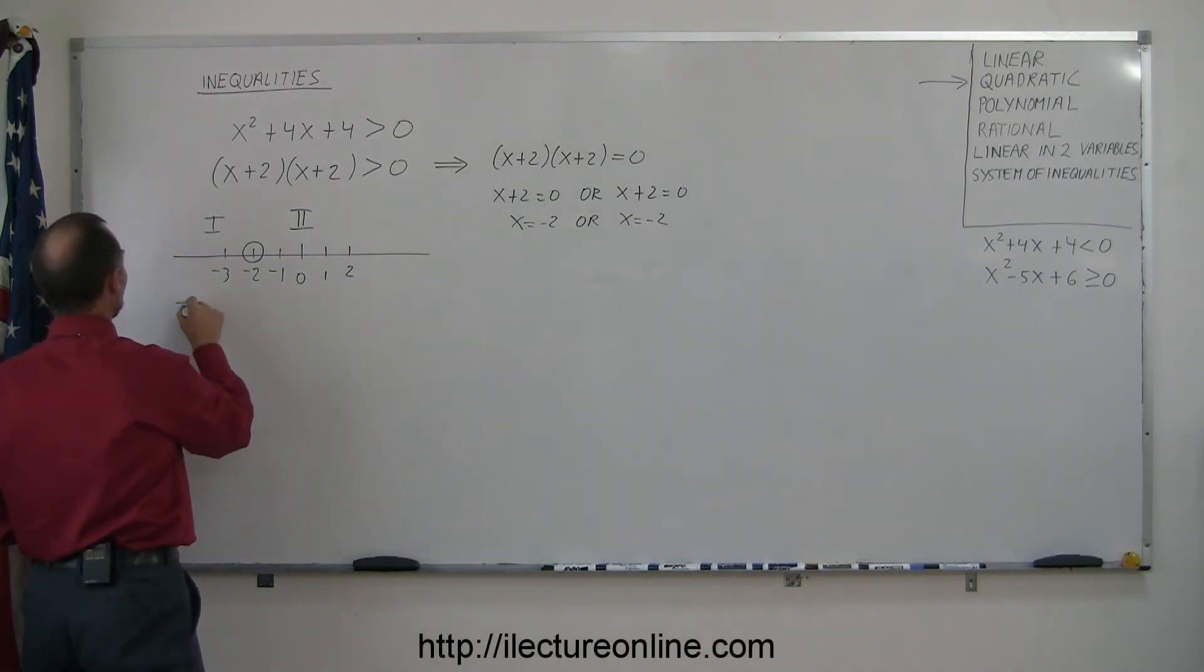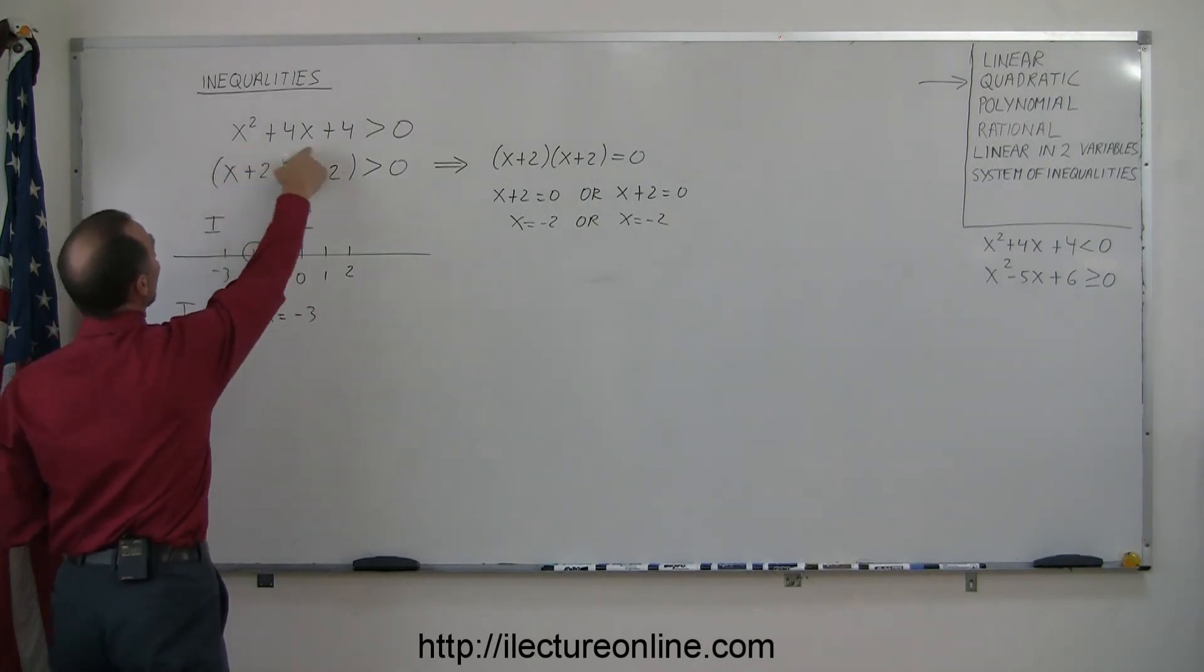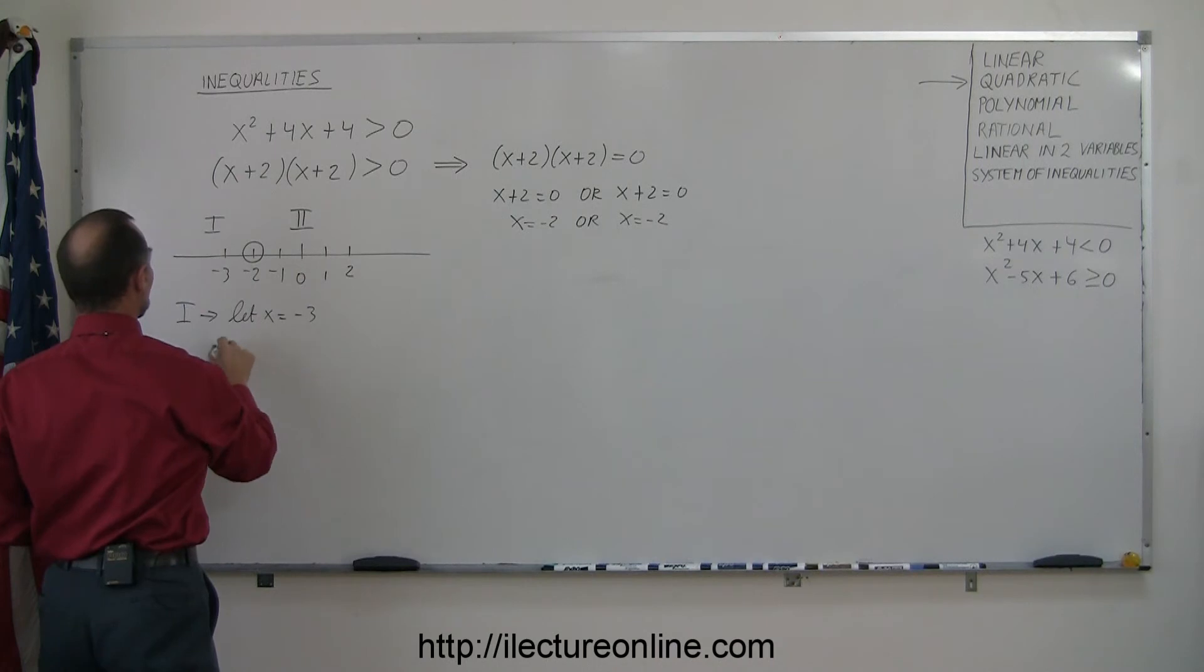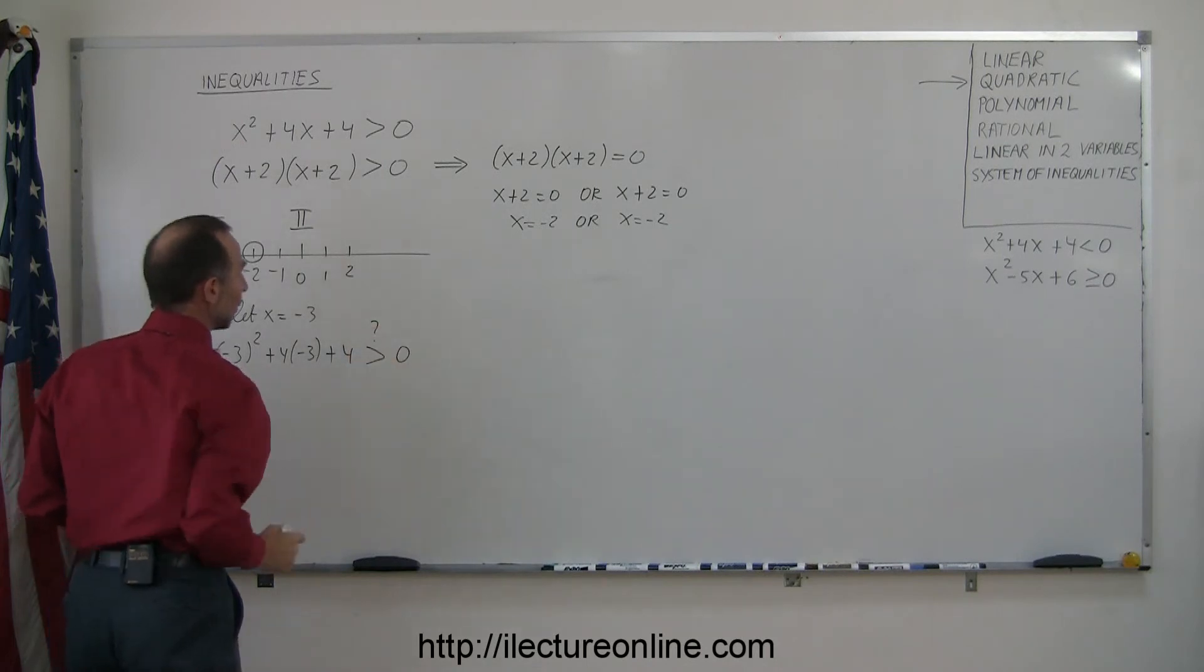So for region one, we're going to let x equal the test point -3. We'll plug that into the inequality right here, so we have (-3)² + 4(-3) + 4. Is that then greater than zero?